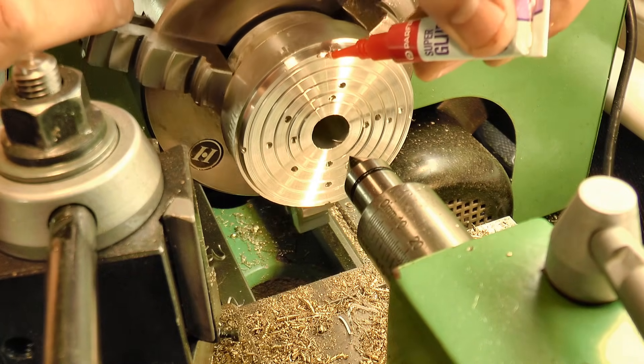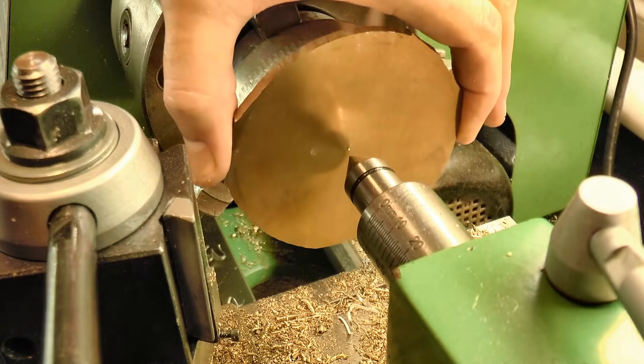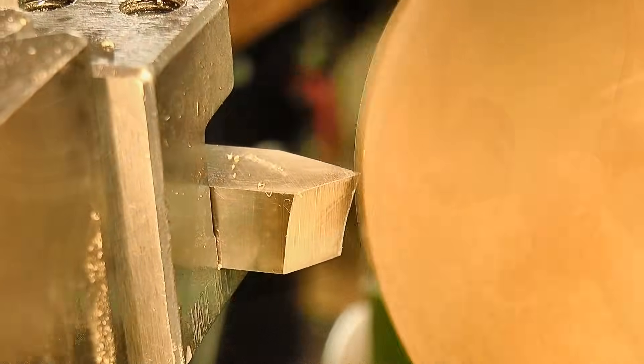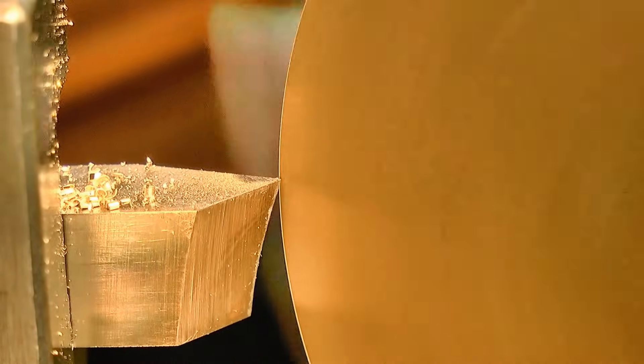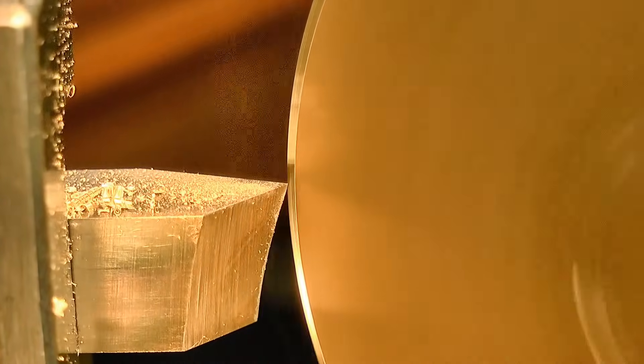Next I made the inner bezel, and in some respects this part was more difficult to make, simply because it ends up so small and flimsy. I held it in a similar way using a superglue arbor, and started by truing up the disc, and then machining the recess for the chapter rim. Much like the outer bezel, I'm aiming for a snap fit with the inside diameter of the chapter rim.